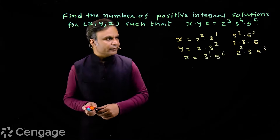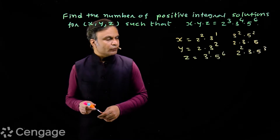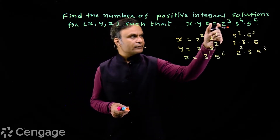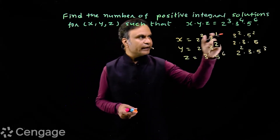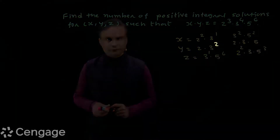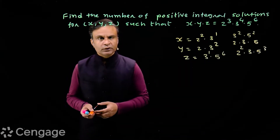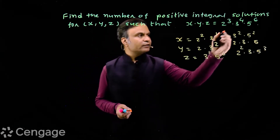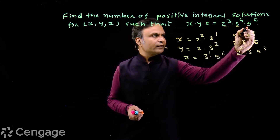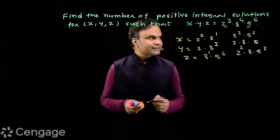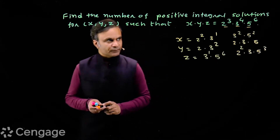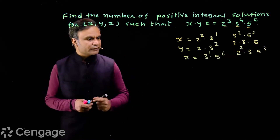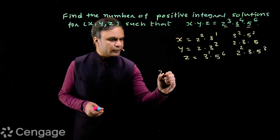What exactly are we doing? We are actually distributing prime factors 2, 3, and 5. We have prime factor 2 appearing 3 times, prime factor 3 appearing 4 times, and prime factor 5 appearing 6 times. So we first write these prime factors in groups.